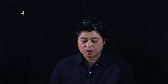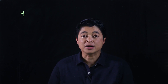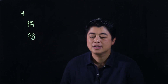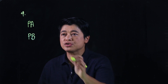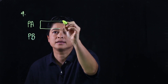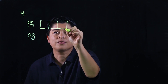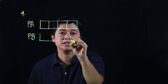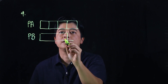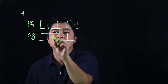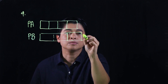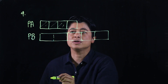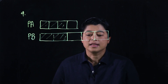Moving on to page 76, problem number four: three-fourths of the mass of parcel A is equal to two-fifths of the mass of parcel B. We'll draw a bar model — three-fourths of parcel A is drawn up to a certain point, and that is equal to two-fifths of parcel B. So the three-fourth portion equals the two-fifth portion of the other parcel.